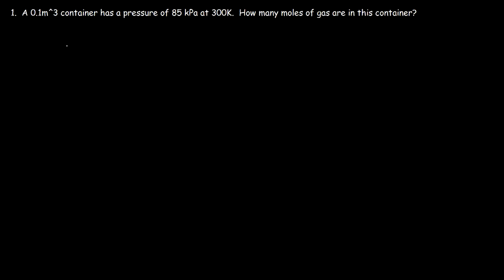The formula we need to use is PV = NRT. In chemistry, the pressure is typically in units of ATM, but in physics it's going to be pascals, or newtons per square meter.